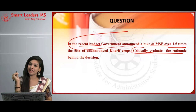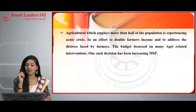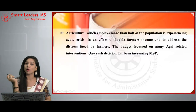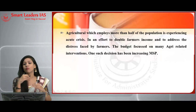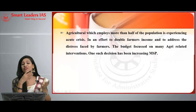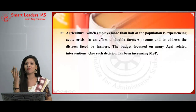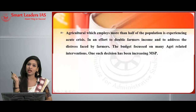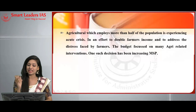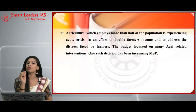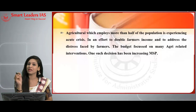You can start the introduction by noting that agriculture employs more than half the population — nearly 49.8% of people are involved in agriculture. Agriculture is the backbone of the Indian economy. In such a situation, there should be efforts to double or increase the income of farmers, and one such way is through the MSP — minimum support price.